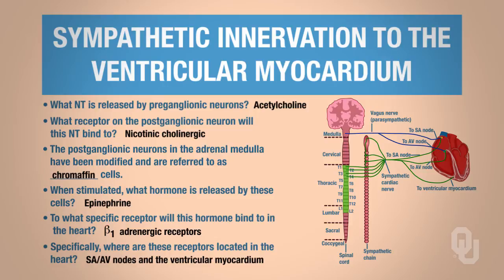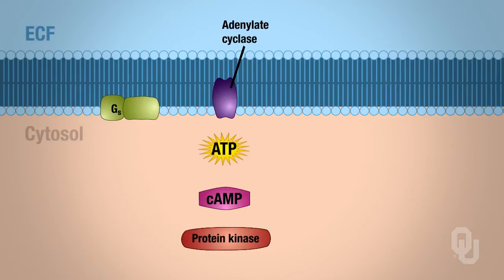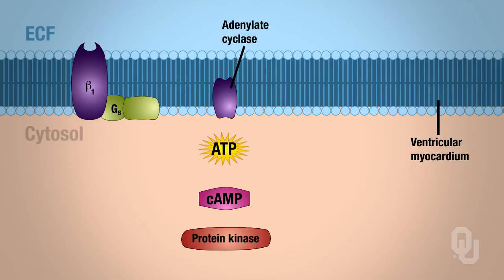What we would like to look at is how the sympathetic nervous system increases contractility in the heart. This would be the plasma membrane of the ventricular myocardium — remember, the myocardium is the heart muscle. We know that we have a beta-1 adrenergic receptor, and we know that norepinephrine or epinephrine can bind to that beta-1 adrenergic receptor. Let's begin with this mechanism.